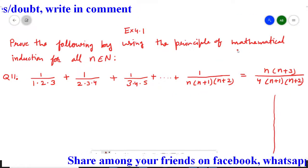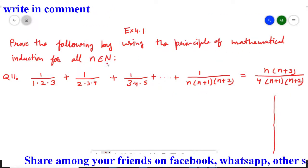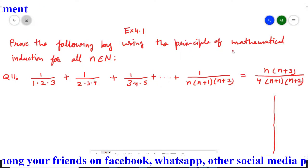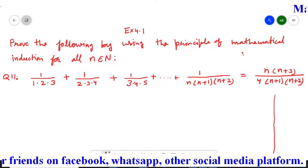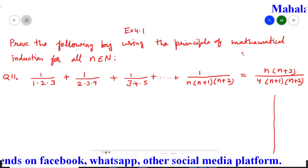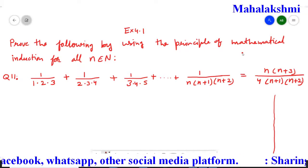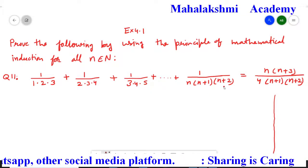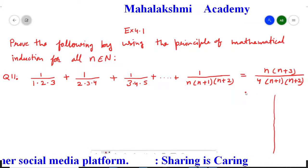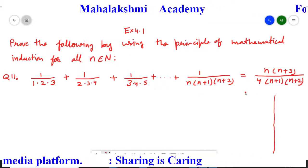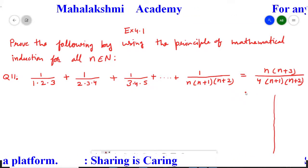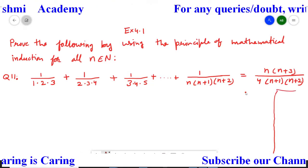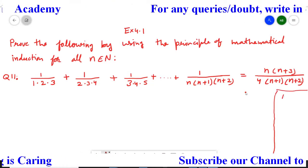First I want to explain about the principle of mathematical induction. There are three steps. If you are able to satisfy those three steps, then we can say that the mathematical statement is true for all natural numbers. First, we have to assume that the given mathematical statement is Pn.